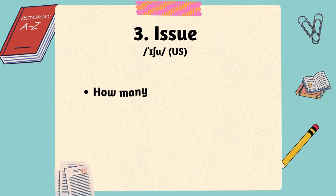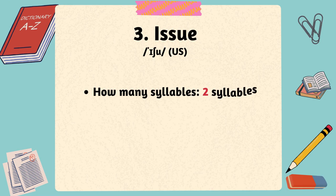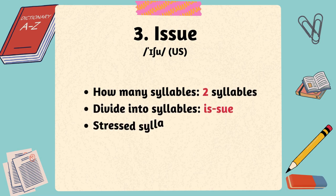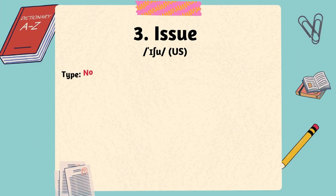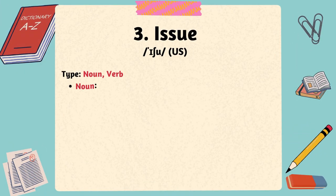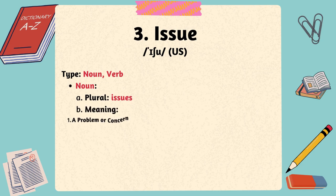The third word is issue. The word issue has two syllables with the stress on the first syllable. Issue has several meanings and can be used as a noun and a verb. Its plural noun is issues.